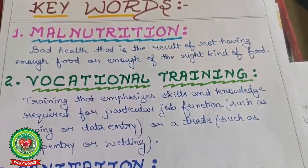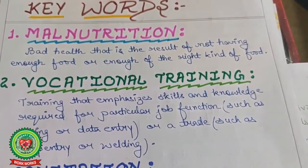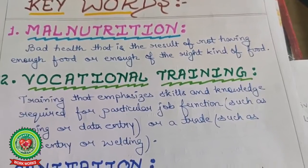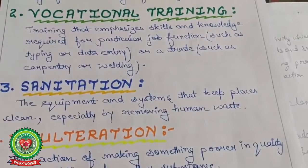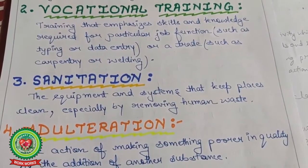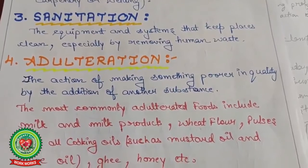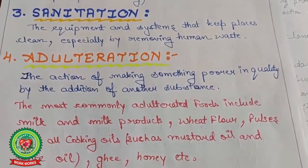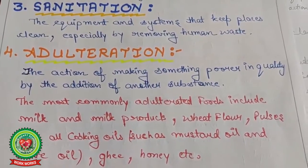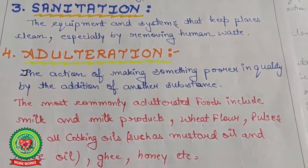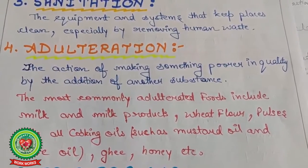Like in the case of a data operator, typing speed is important, or a trade such as carpentry or welding. Third: sanitation — the equipment and systems that keep places clean, especially by removing human waste. Fourth: adulteration — the action of making something poor in quality by addition of some substances, like when stones are mixed in pulses or water is mixed in milk. The most commonly adulterated foods include milk and milk products.